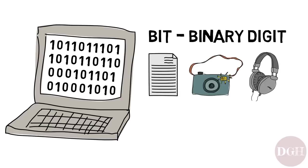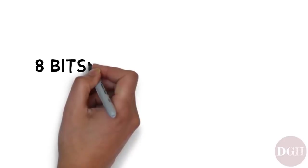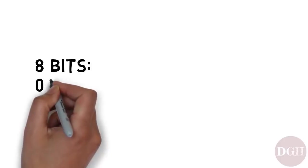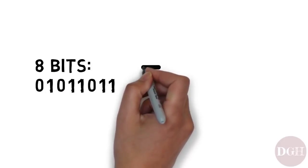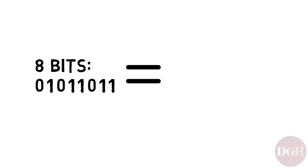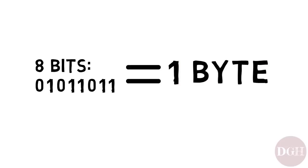The number of bits we have determines how much information we can store. It turns out, if you take 8 of these bits — 8 of these ones and zeros — and put them together, that's called a byte. It's spelled with a Y, and it refers to 8 bits put together.